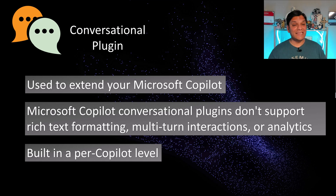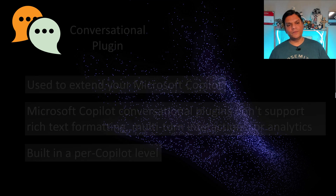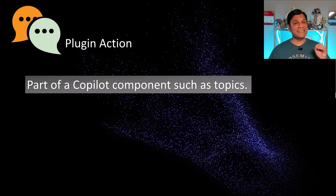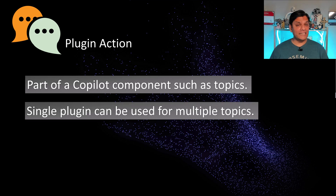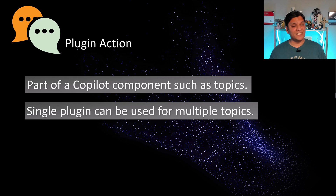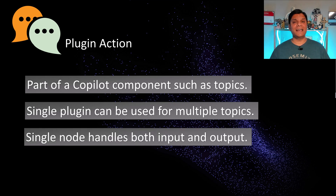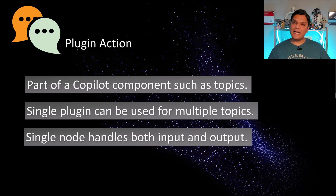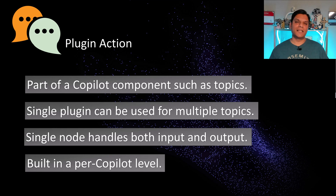You've got to first go and create that co-pilot and then add your conversational plugin. On the flip side is plugin actions — plugin actions are part of the co-pilot component such as topics. You can create a single plugin action and use it multiple times across multiple topics, which saves so much time. Instead of reusing a node or set of nodes, you build one plugin action and call it across multiple topics. The beautiful thing is that the plugin action can handle both the input and the output — as if one plugin action handles two nodes' worth of work. This is also built at a per co-pilot level.